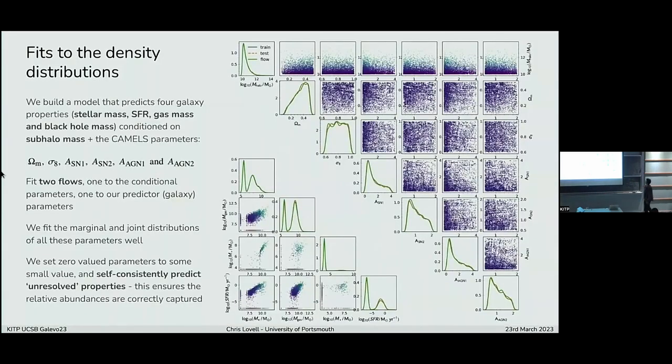And so these are some of the results just fitting to that density distribution. The top right here are our conditional parameters. So we condition on subhalo mass, as well as these six parameters. And then on the left here are the predictor galaxy properties. So we predict stellar mass, star formation rate, black hole mass and gas mass. You'll notice within these distributions that you see these kind of weird discrete spikes. So we fit to this in log space. So we set zero valued parameters essentially to some small value. Why don't we just get rid of them? This becomes important when we're using this as a generative model. We want to be able to self-consistently predict halos that contain unresolved galaxies and get the abundances correct.